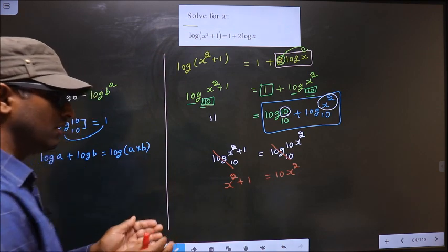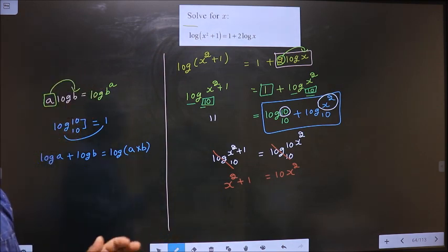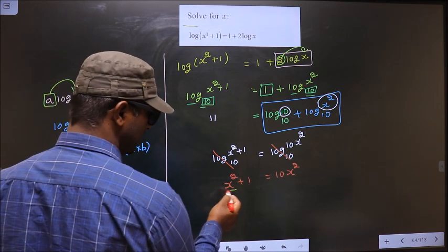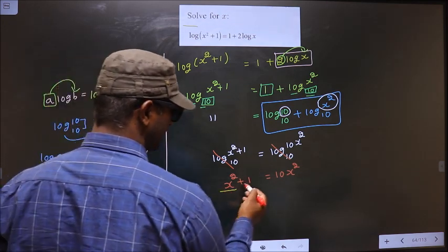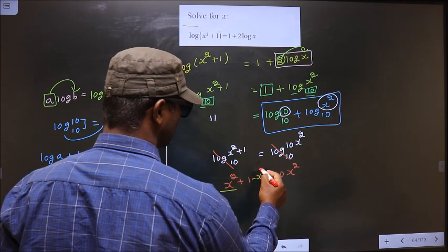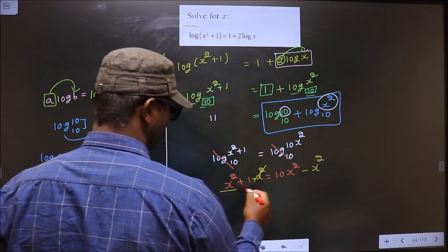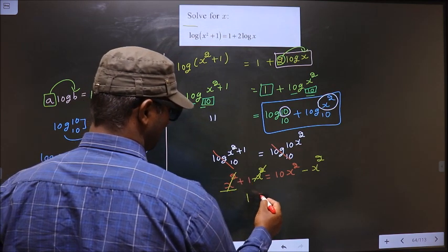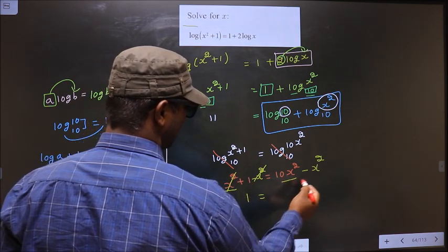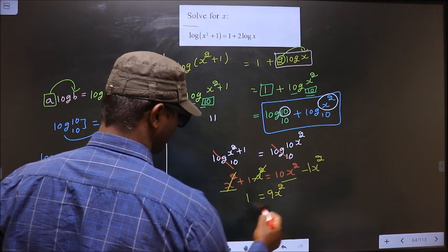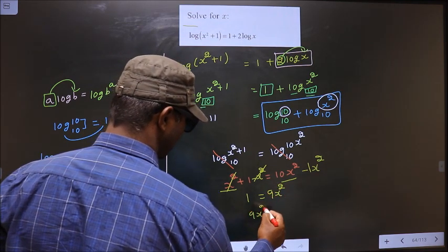Now all x terms one side and the numbers on the other side. This x² should not stay here. To remove x² from here, you subtract x² on both sides. It cancels out here—you have 1 = 10x² - 1x², which is 9x². So 9x² = 1.